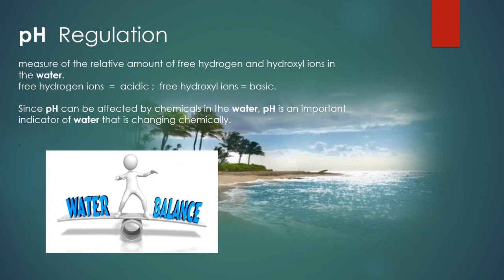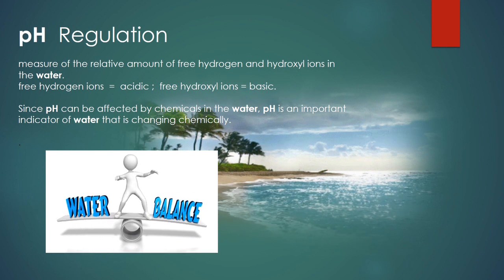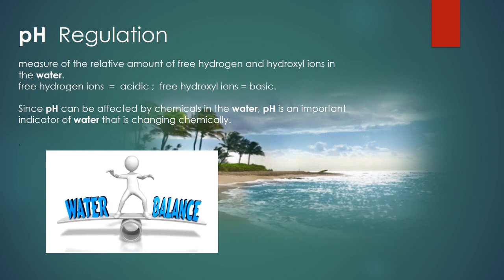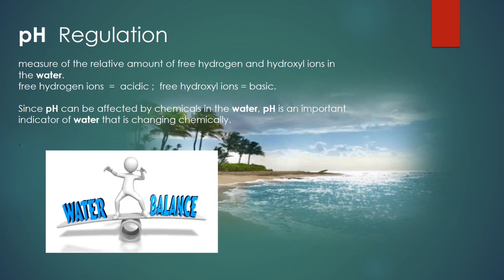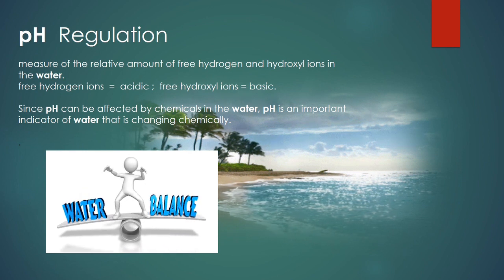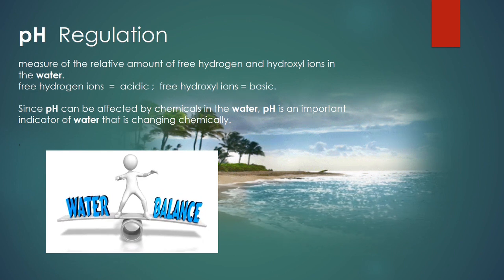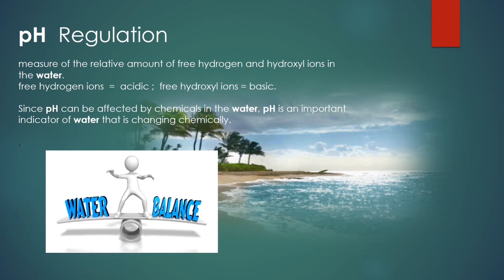Regarding pH regulation: the measure of the relative amount of hydrogen ions and hydroxyl ions in water are the determinants of pH balance. Water with predominant hydrogen ions is acidic, while water with predominant hydroxyl ions is basic. Since pH can be affected by chemicals in water, it is an important indicator of water that is changing chemically, and there must be a balance between pH and water.